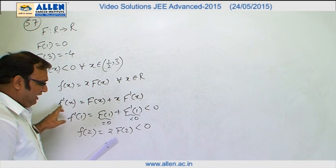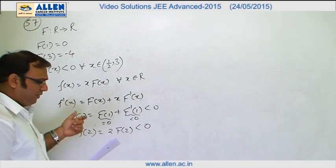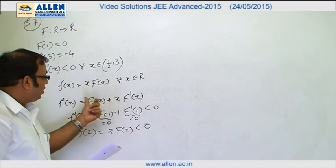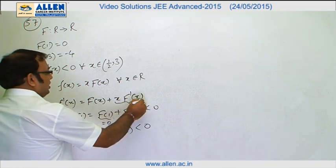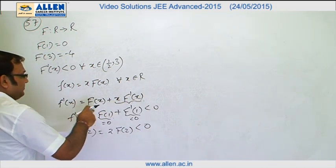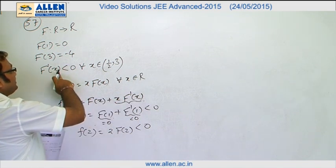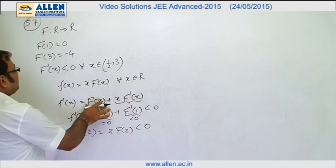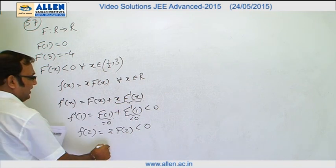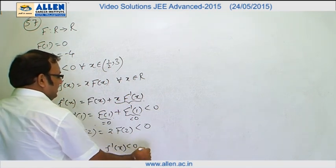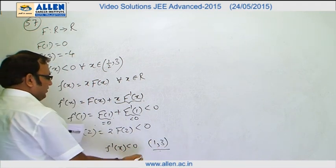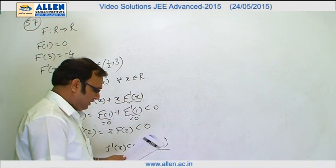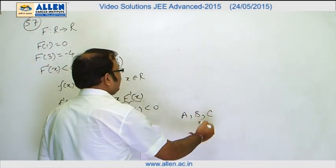Finally, they ask whether f'(x) is negative, zero, or sometimes positive in the open interval (1, 3). We have f'(x) = F(x) + x · F'(x). Since F'(x) < 0 throughout (1/2, 3), the term x · F'(x) is negative on (1, 3). And F(x) is also negative on (1, 3). Therefore f'(x) is negative throughout (1, 3) and will never be zero. With this, options A, B, and C are correct for this question.